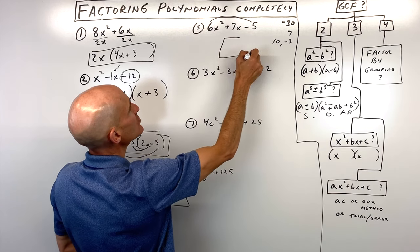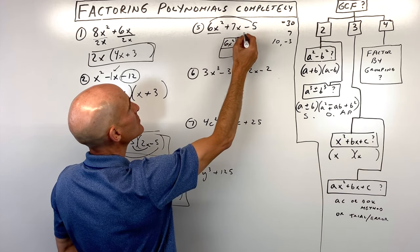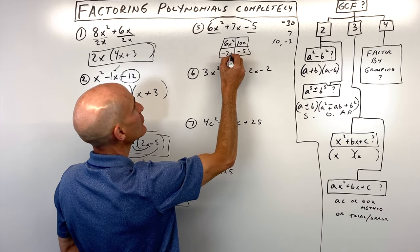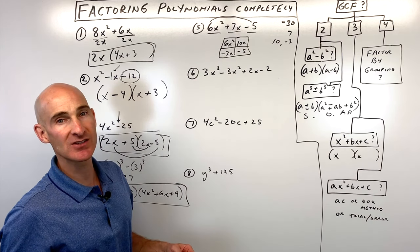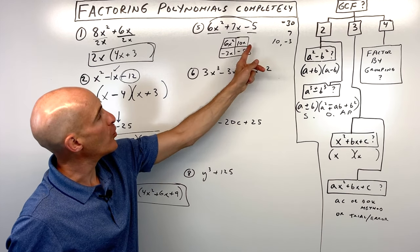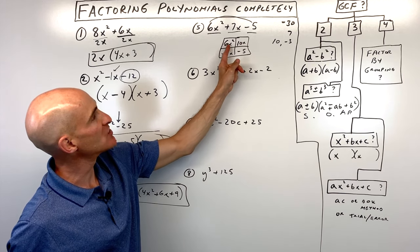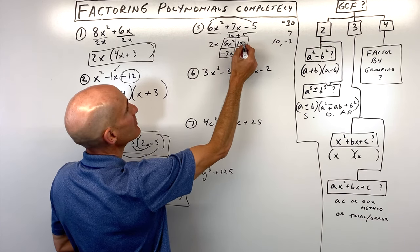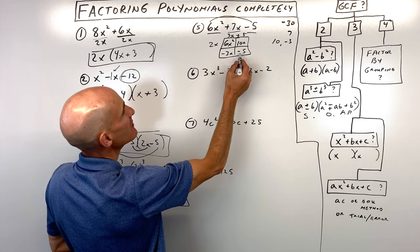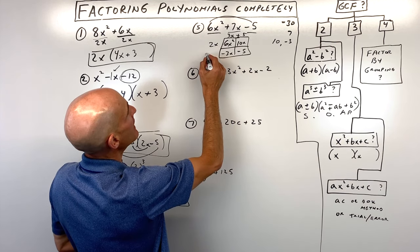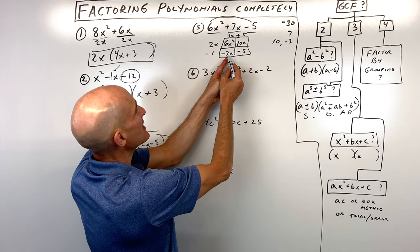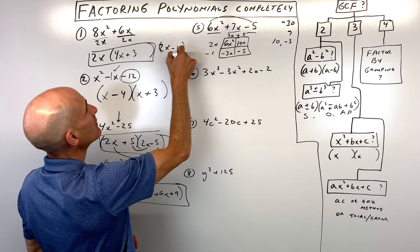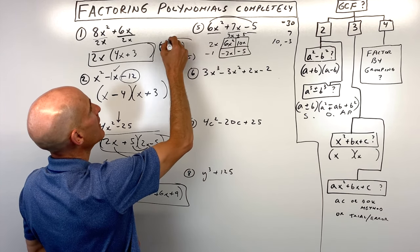When we do the box method, we draw a box. We put the first term, 6x squared, in the first box, and the last term, negative 5, in the last box. Then we write 10x and negative 3x in the remaining boxes — those add up to the middle term, 7x. Looking at the rows horizontally, we factor out 2x from 6x squared and 10x, leaving 3x plus 5. From negative 3x and negative 5, we factor out negative 1. So our factored form is 2x minus 1 times 3x plus 5.